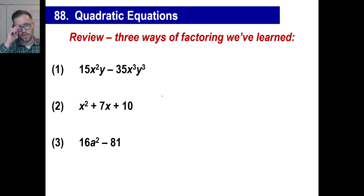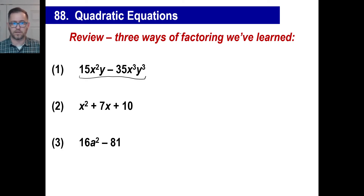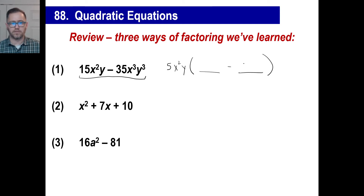It's really neat how this works. Let's go back to the old ways we've done. We have done three ways of factoring so far this year. This is the first way — you take the five out. That goes out first. And then I got x squared and x to the third — that's going to be x squared I pull out. Then y and y cubed, I pull out a y. Then we go, okay, what's left over when I do that?